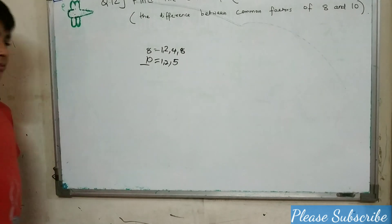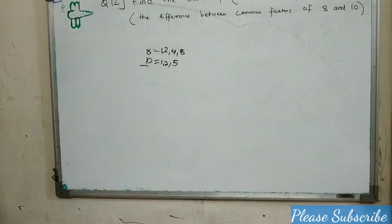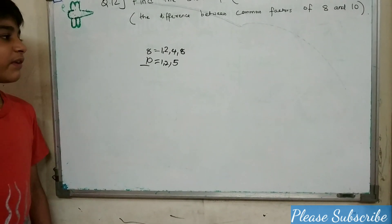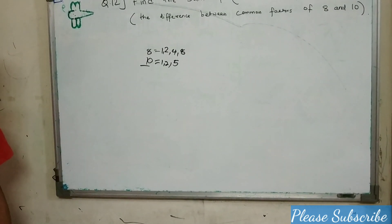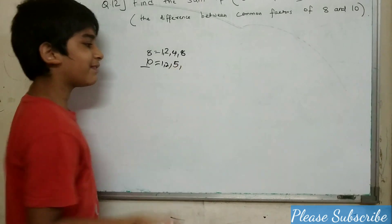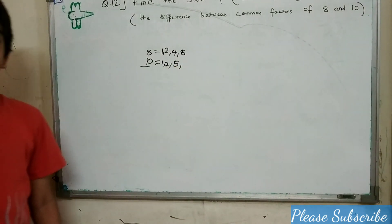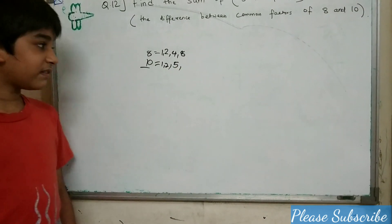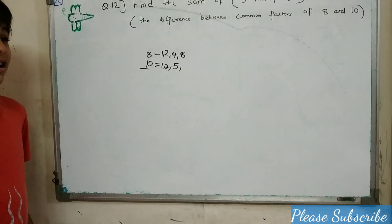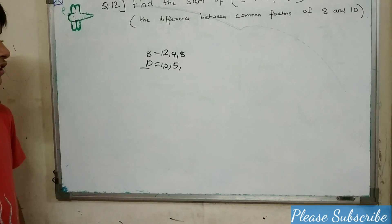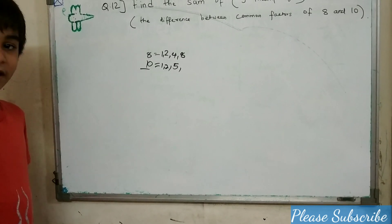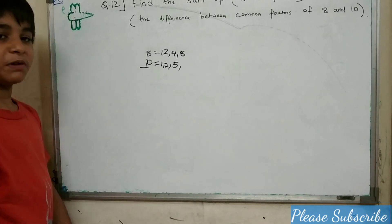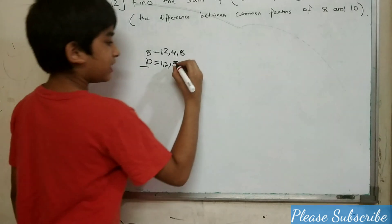5 is a factor of 10 because 5 times 2 is 10. 6 is not a factor of 10. 7 is not a factor of 10. 8 is not a factor of 10. 9 is not a factor of 10. But 10 is a factor of 10.